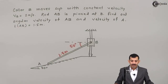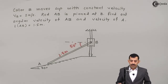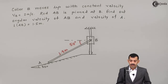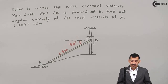Hi friends, we will solve a problem on kinematics of rigid body. In this problem, collar B moves up with a constant velocity of 2 meters per second, so VB is given as 2 meters per second. Rod AB is pinned at the beam. We need to find the angular velocity of AB and the velocity of point A.